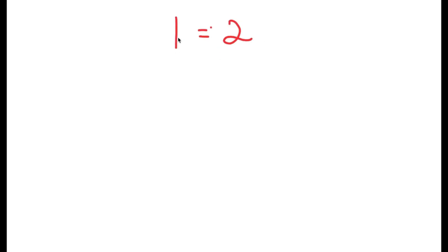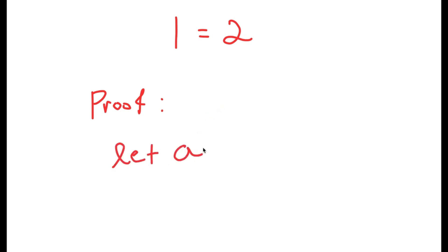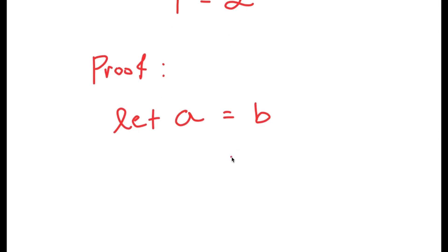In this video I'm going to prove that one is equal to two. For the proof, I'm first going to start with a variable a and let this variable a equal another variable b. So all we're doing is saying we made two variables and we're saying that they're equal to each other.